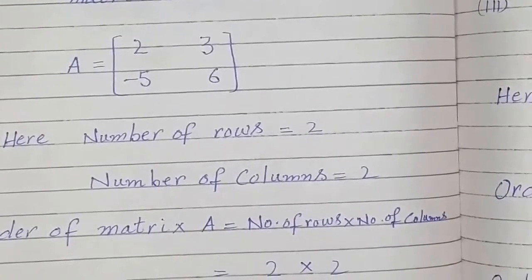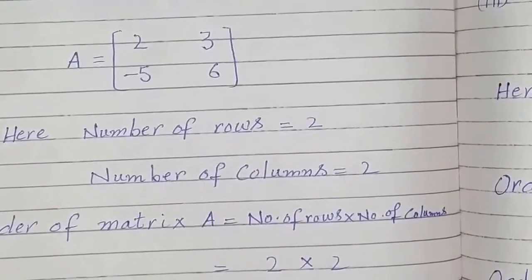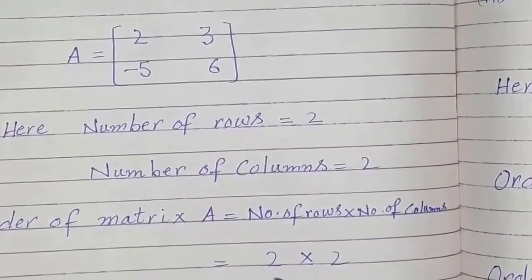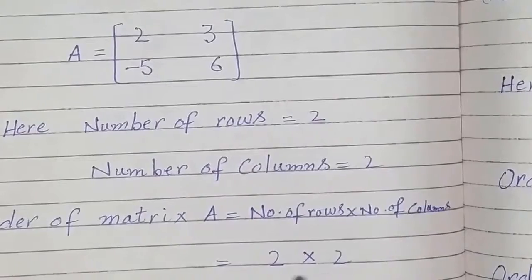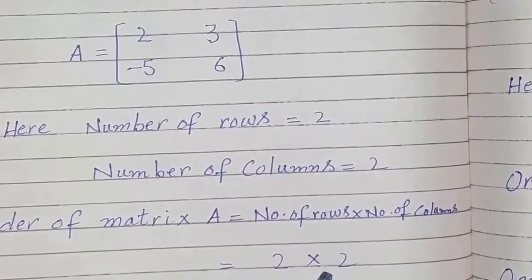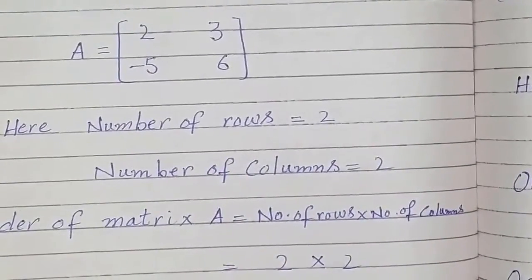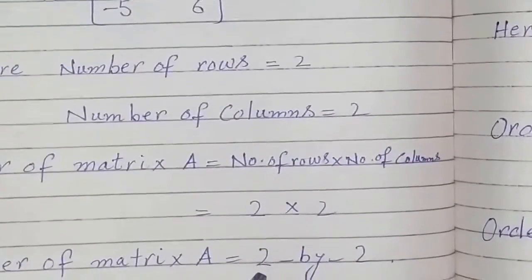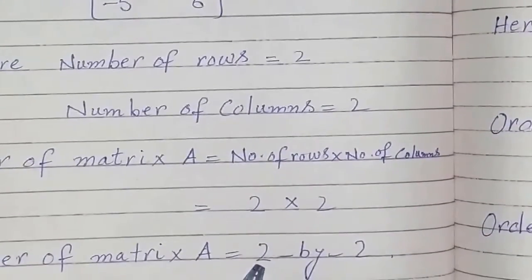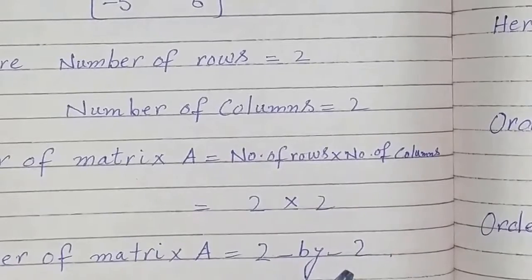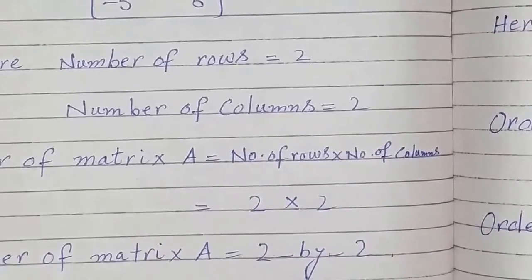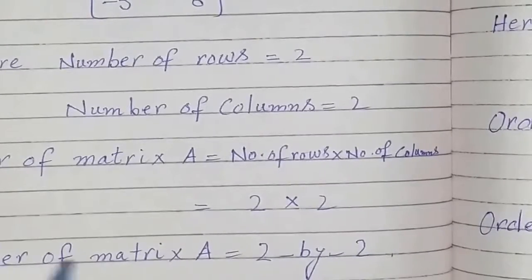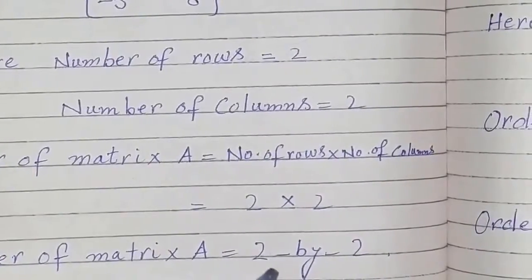We can also use the notation without the multiplication sign — we can write it as 2 by 2. So the order of matrix A is 2 by 2.